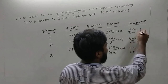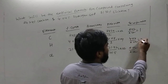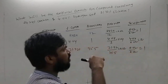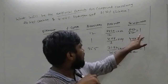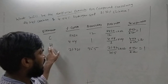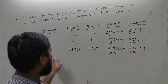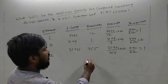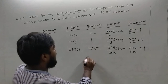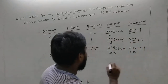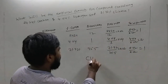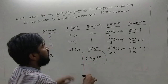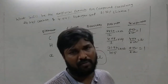So the results are: carbon = 1, hydrogen = 2, and chlorine = 1. That means the simple ratio gives us 1 carbon, 2 hydrogen, and 1 chlorine. Therefore, the empirical formula for this compound is CH₂Cl.